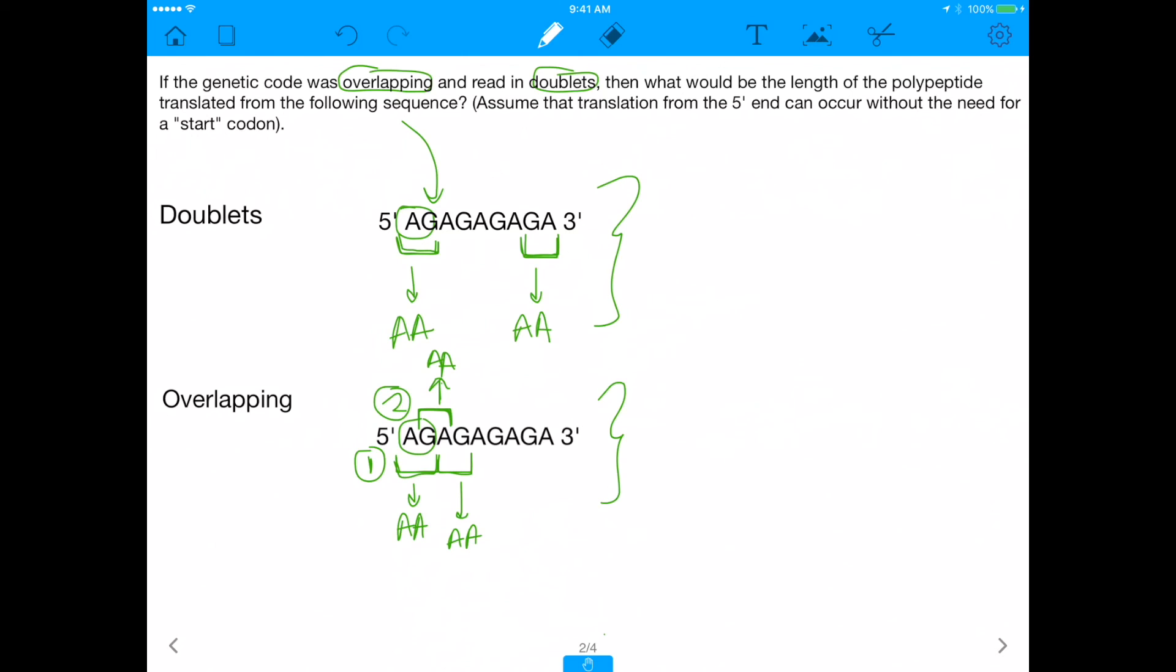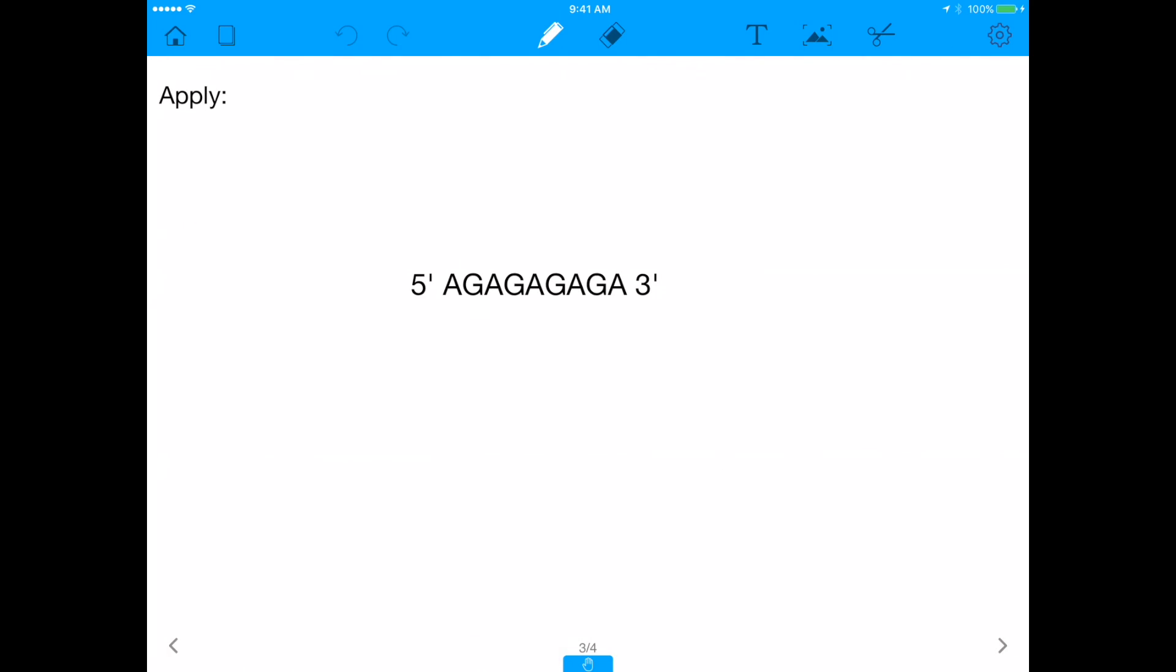So just remember, there can be many different permutations of this question. I could have easily asked like quadruplet, or I could have asked non-overlapping. But this was kind of to show you what I mean overall when I say overlapping or non-overlapping, or doublets versus triplets. So now, given that I showed you guys what I mean by doublets and overlapping, let's apply it to this question. Let's apply the fact that we have a doublet code and the fact that the doublet code is overlapping. How many amino acids can we get out, assuming that we have overlap and doublets?